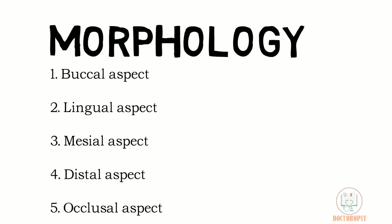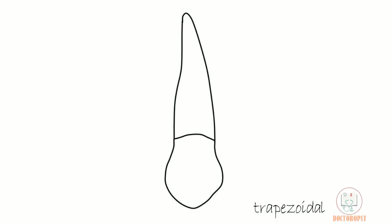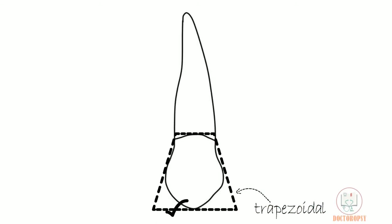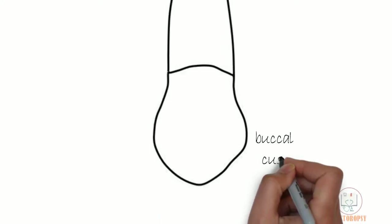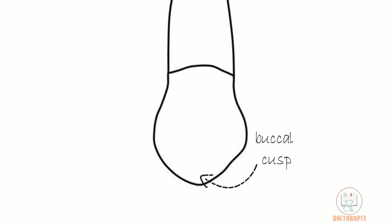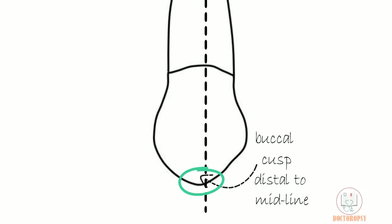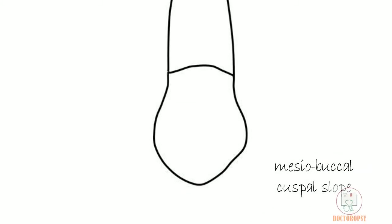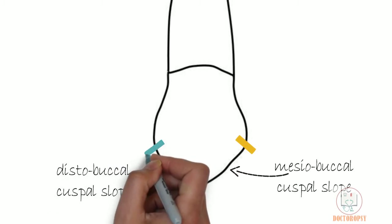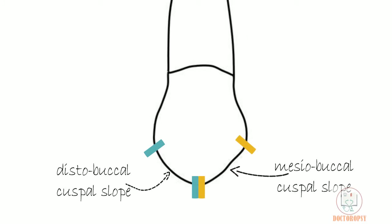The morphology of the tooth is studied under five aspects. Starting with the buccal aspect: the outline form of the crown is trapezoidal, with its longer parallel side towards the cusp and shorter side towards the cervix. Only the buccal cusp is visible from this aspect as the smaller lingual cusp hides behind it. The buccal cusp is slightly distal to the midline axis of the tooth. Two cuspal slopes are seen: the mesiobuccal cuspal slope running from the cusp tip to the mesial contact area, and the distobuccal cuspal slope running from the cusp tip to the distal contact area. The mesiobuccal cuspal slope is longer than the distobuccal cuspal slope.